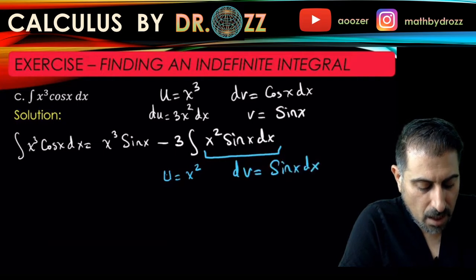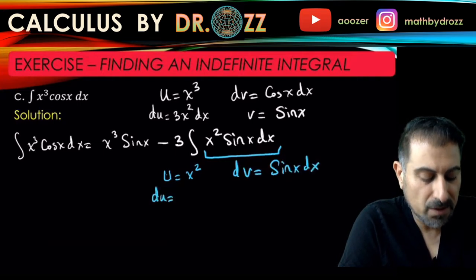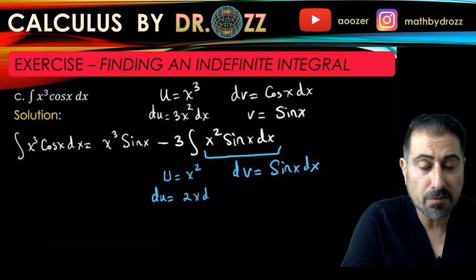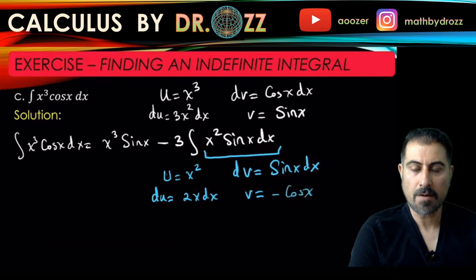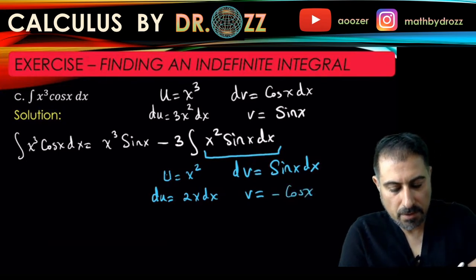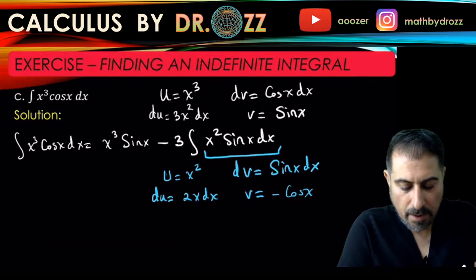I'm going to look at du which is 2x dx and v to be the anti-derivative of sine, that is minus cosine x. So I'm going to continue here, so I'm going to put a big equality sign here.